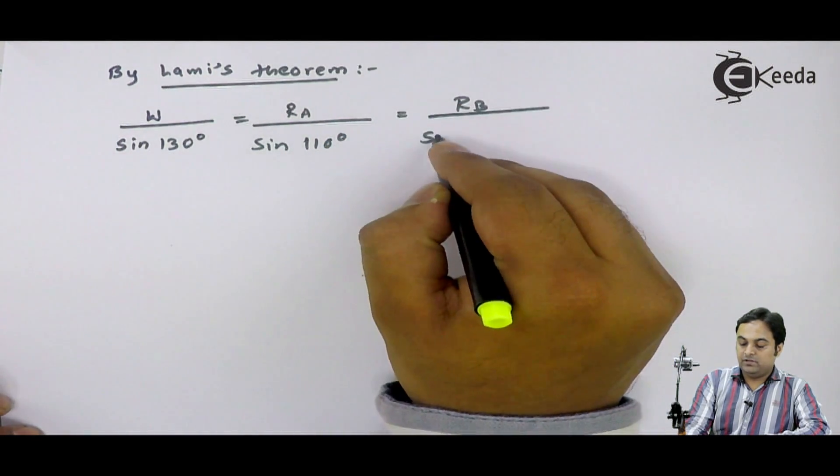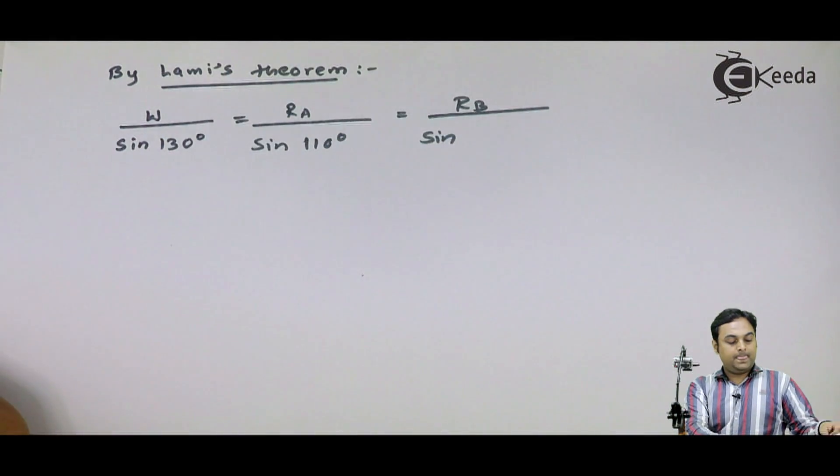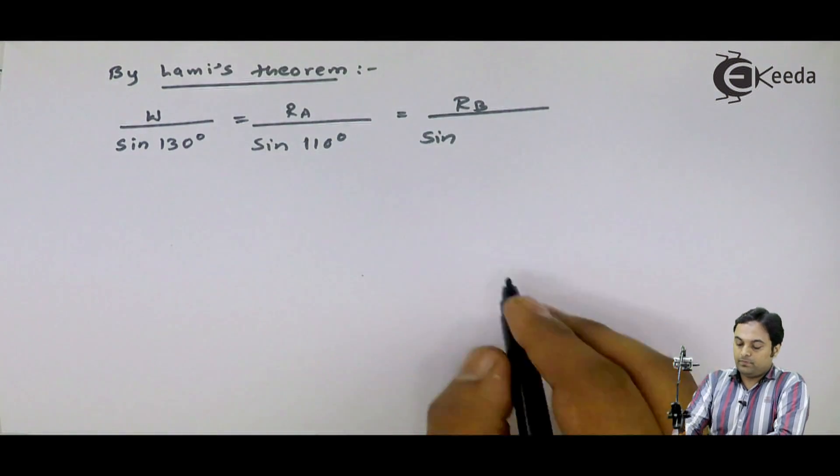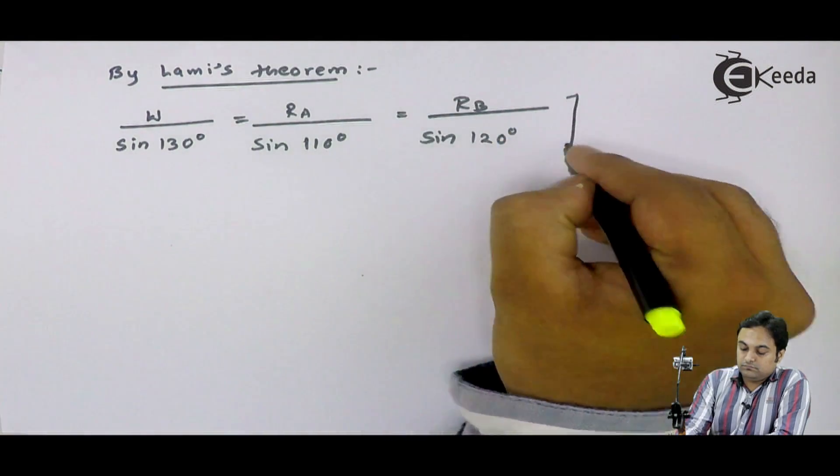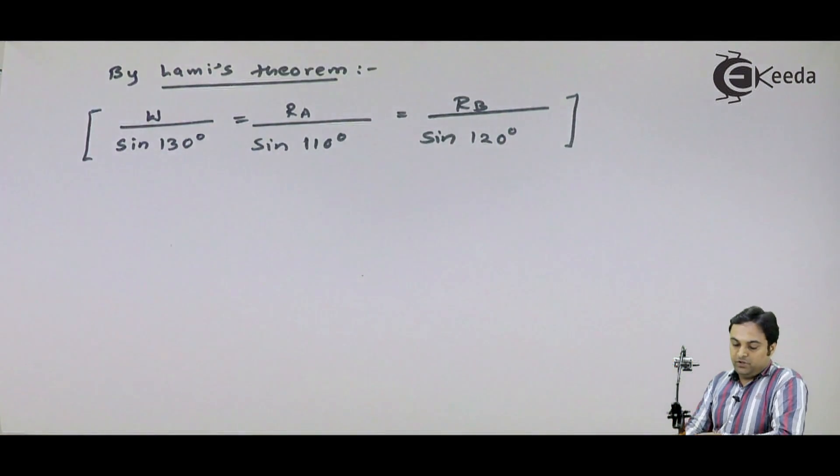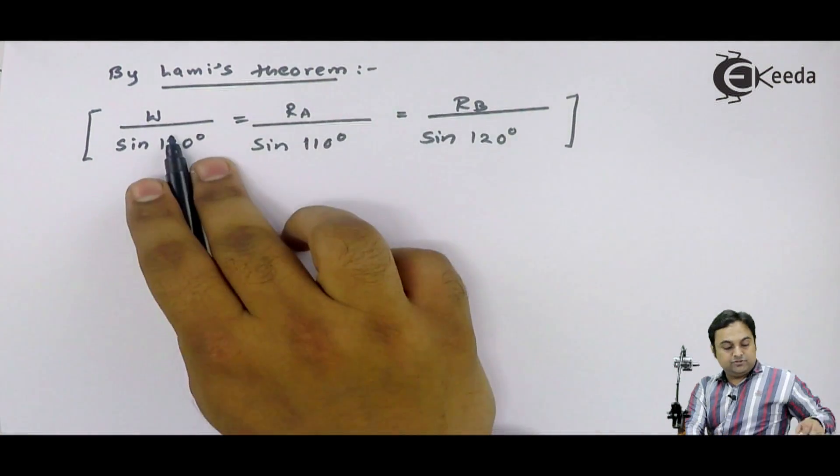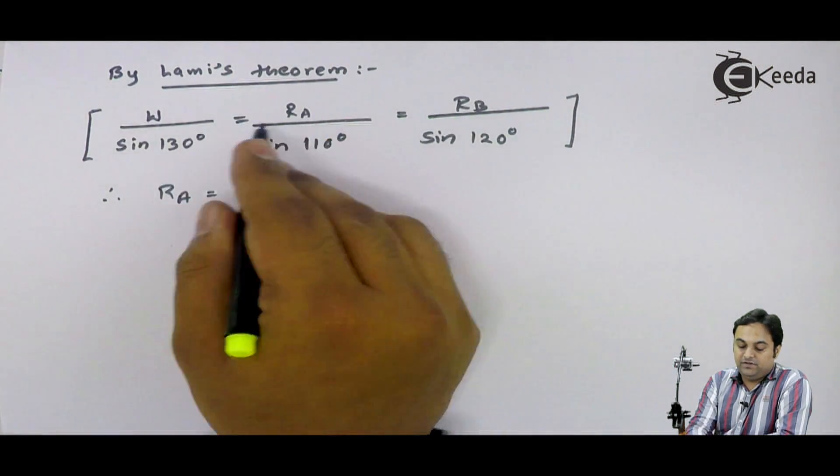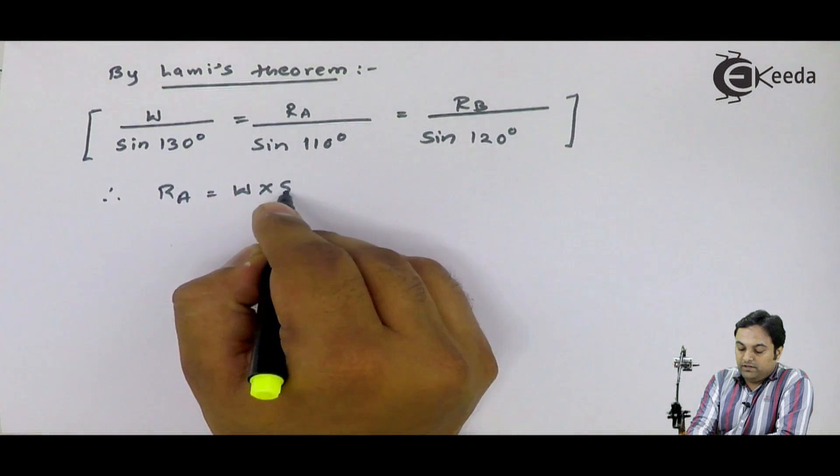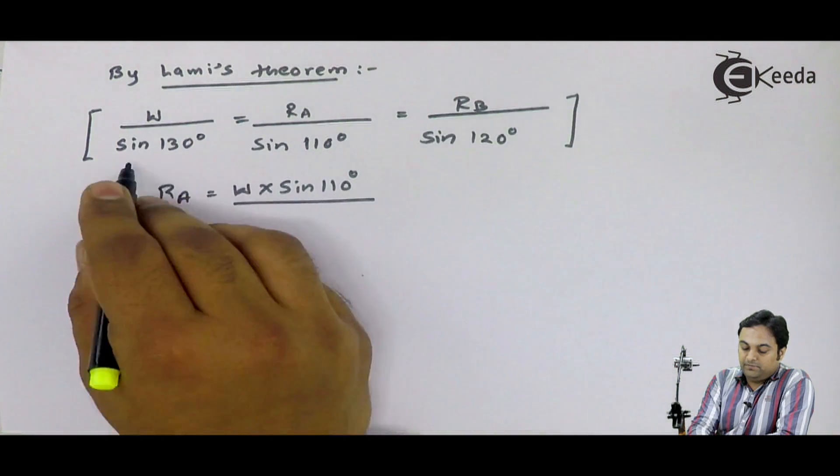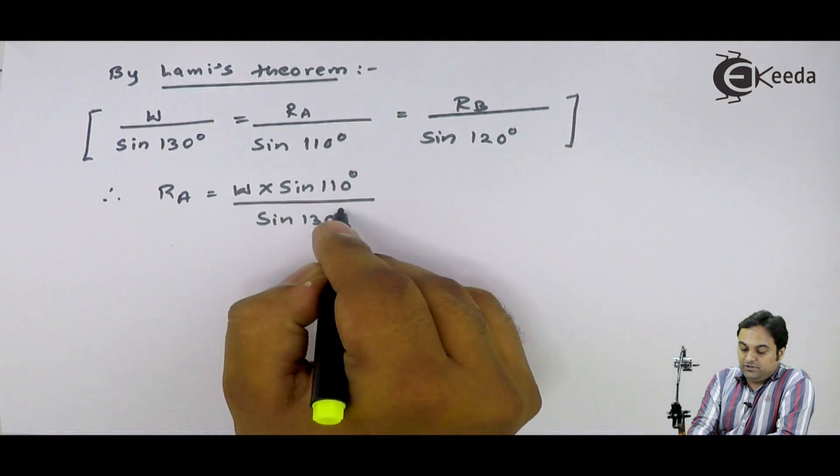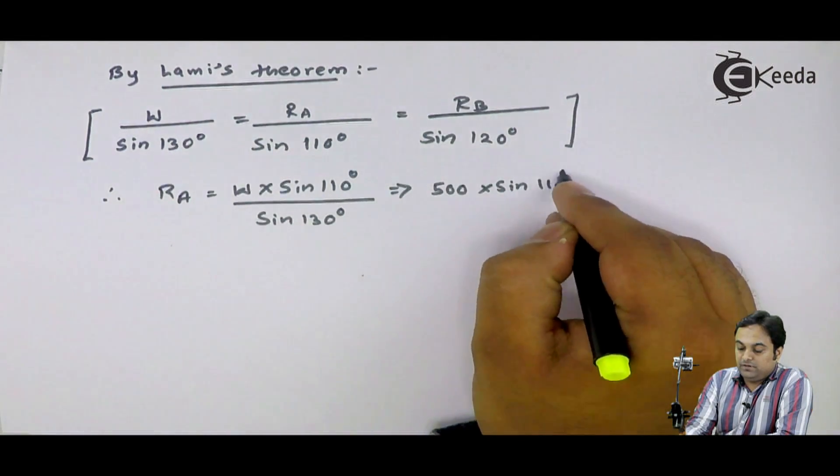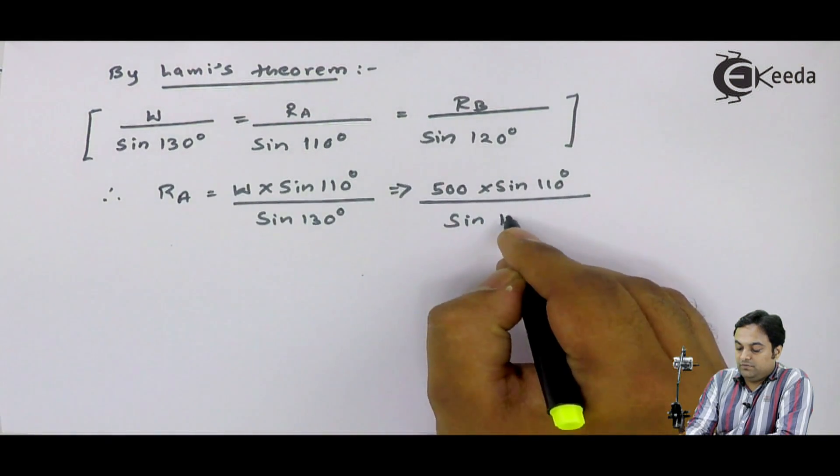It is 30 plus 90, which is 120 degree. This much is the result of Lame's theorem. Now, from this, I can easily get RA and RB, because W is given as 500 Newton. I will say that therefore, RA is equal to W into sin 110 divided by sin 130 degree, that will give me W as 500 into sin 110 divided by sin 130 degree.